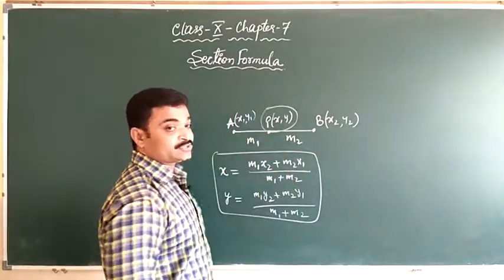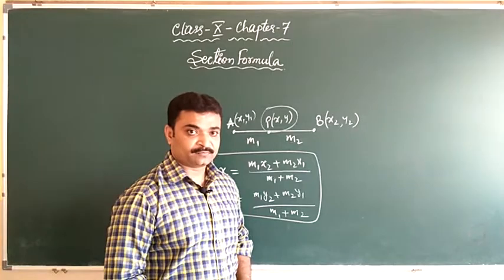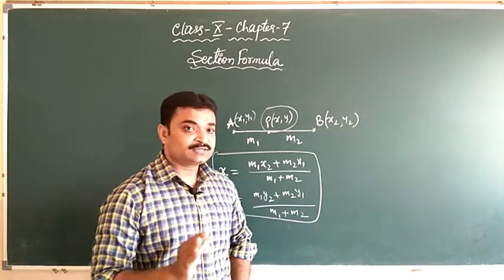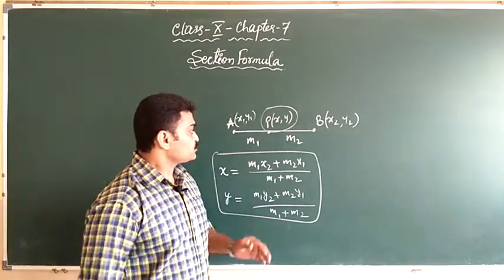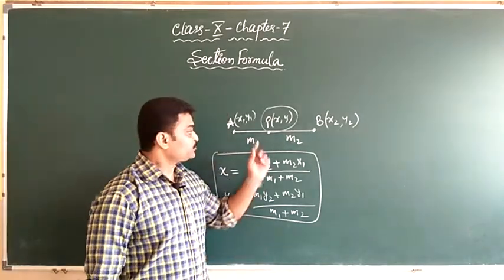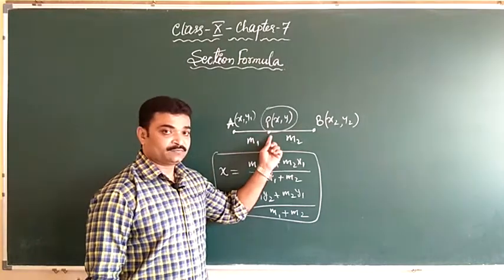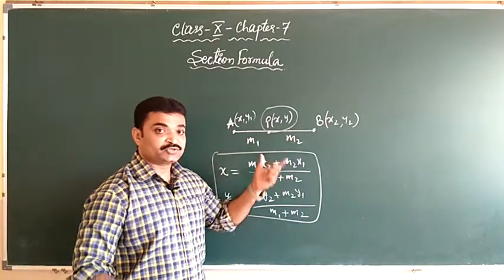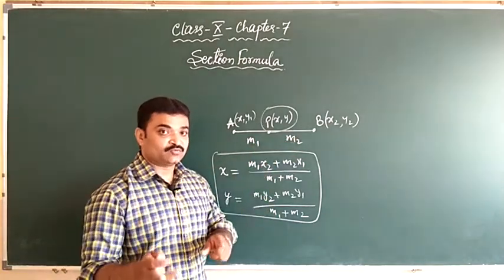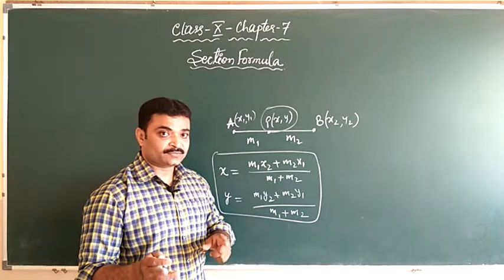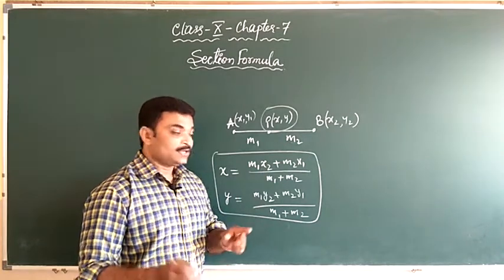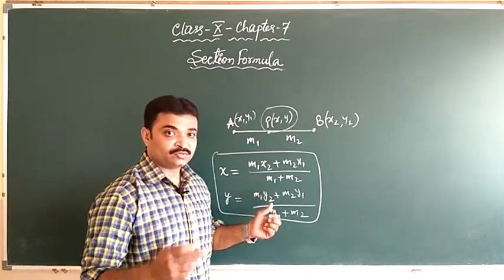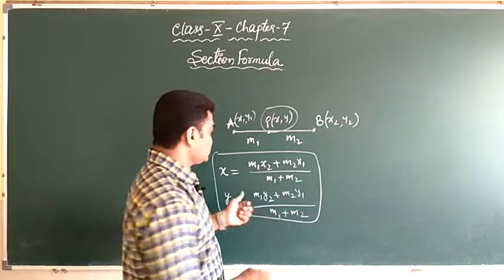This is called the section formula. Suppose this point P divides AB in the ratio 1:1, that means m1 = 1 and m2 = 1.